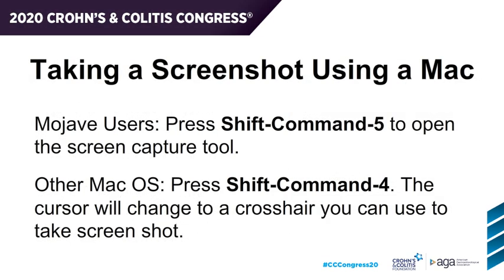If you're using a Mac and you're using the Mojave operating system, press Shift-Cmd-5 to open the Screen Capture Tool to take an image. If you're using any other Mac operating system, press Shift-Cmd-4. The cursor will then turn into a crosshair mark that you can use to outline the table you want to save as an image.